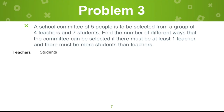Now let's go to problem 3. A school committee of 5 people is to be selected from a group of 4 teachers and 7 students. You saw the words committee and selected, so this is a combination problem. Find the number of different ways the committee can be selected. There must be at least one teacher and there must be more students than teachers. Underline all the information in the word problem — we need to select 5 people from 4 teachers and 7 students.